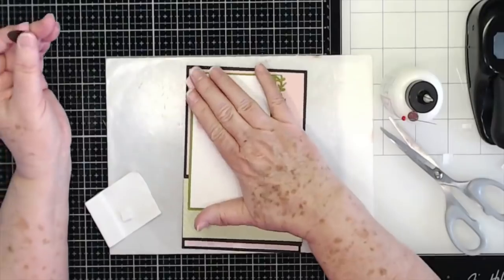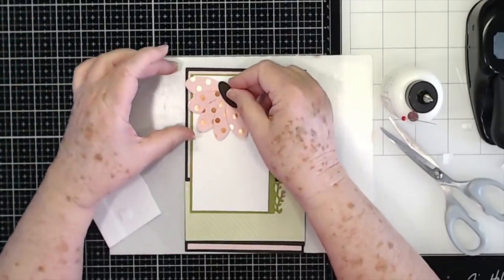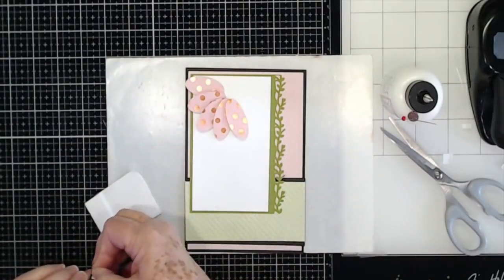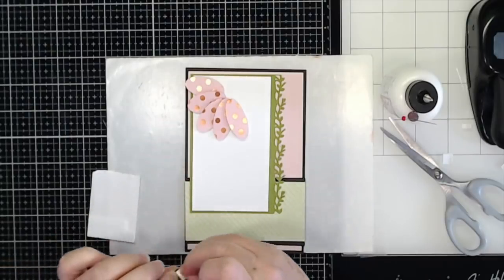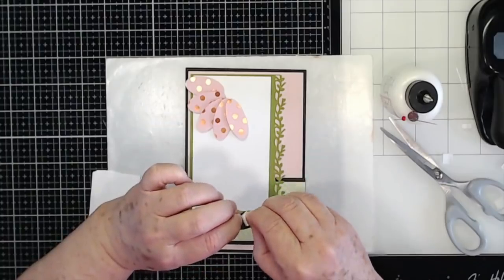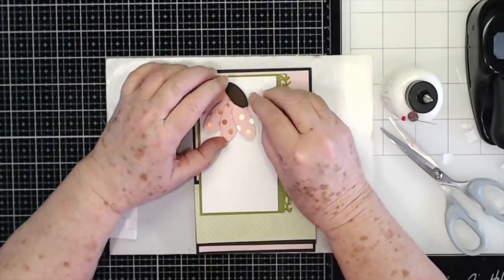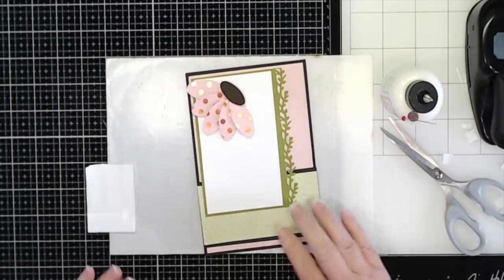So just press those down and press it down lightly in the beginning and then you can always move them around. And then we're going to take this and I'm probably going to put this on two pop dots because we want it to stand up a little bit to show that it's our center. Isn't that cute already?